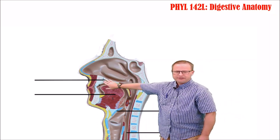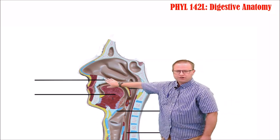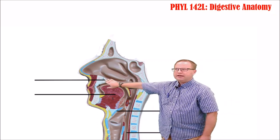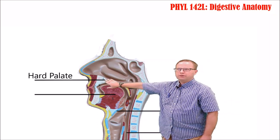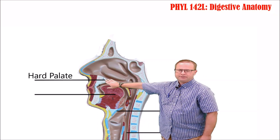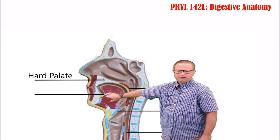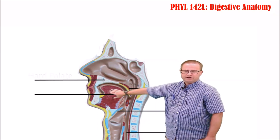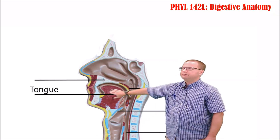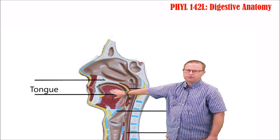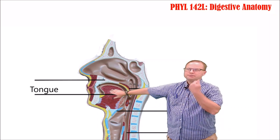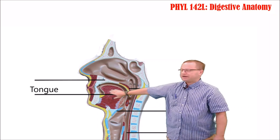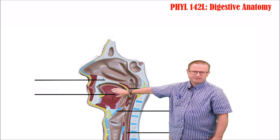Over here you can see the hard palate, made up of your palatine bones and your maxillary bones. Below that is your tongue. The tongue is an important digestive organ because it helps to force food back into the pharynx so it can be swallowed.